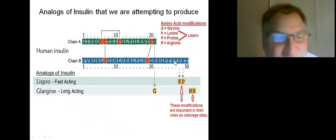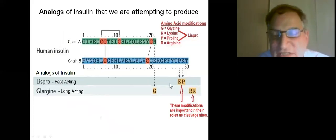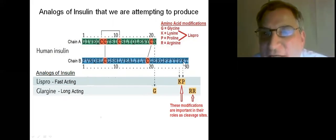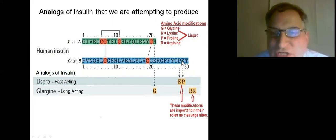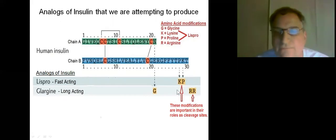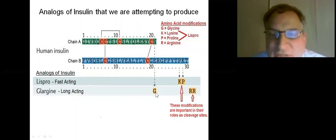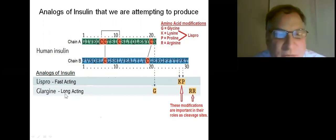Here are the analogs of insulin that we are attempting to produce. We're attempting to produce Lispro, which is fast-acting, and Glargine, which is long-acting. With Lispro, the only change is on chain B — human insulin has proline and then lysine, but with Lispro it's switched to lysine and then proline. That's actually what gives it its name: lysine-proline is Lispro. In Glargine, there are three changes: in chain A, the amino acid asparagine (N) becomes glycine (G), and then we have two arginines (R) added at the very end. These modifications are important for the protease cleavage sites in our project.